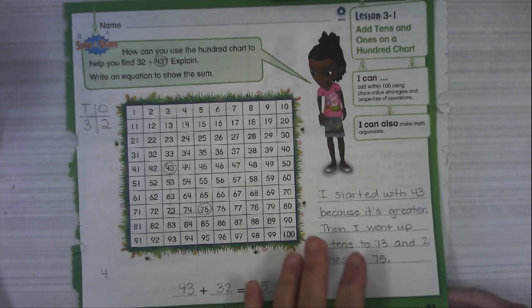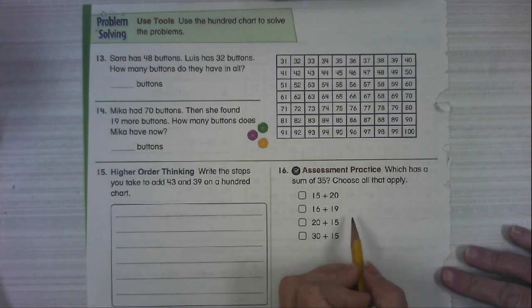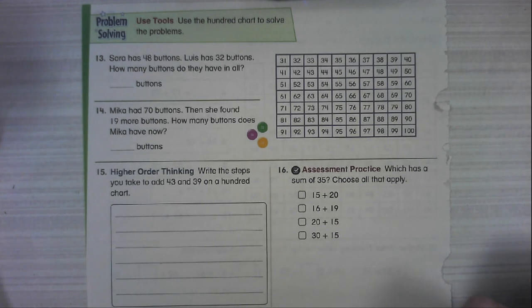Number 16, which has a sum of 35? Choose all that apply. That means you have to work all of them out to see which ones equal 35. Okay.